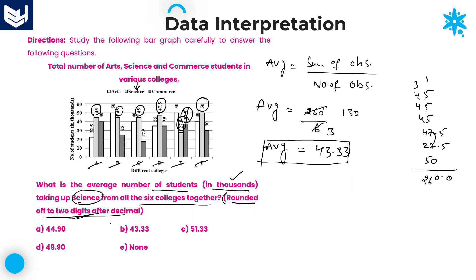That is our required answer. Option B is the right choice for this question. In this way we need to solve questions related to this model. I hope you understand each and every problem. In the upcoming sessions we will discuss more problems related to bar graph data interpretation. Thank you. Thanks for watching.